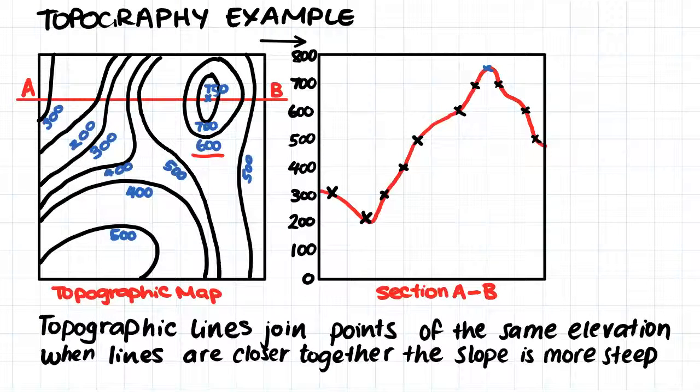Firstly, we will talk about topography. A topographic map is a map that has lines that join points of the same elevation. So for example, along this line here, the surface of the Earth is 500 meters above sea level.